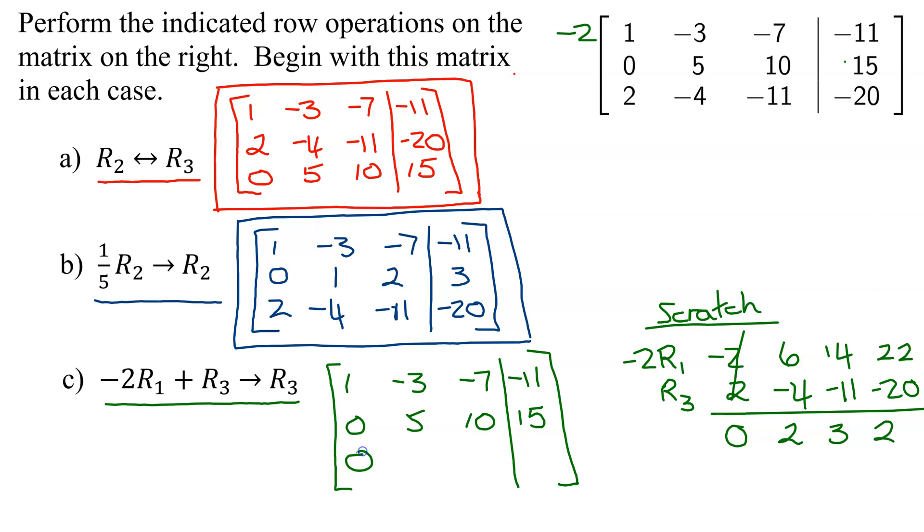So my row 3 is 0, 2, 3, and 2. So this is the answer to part C.